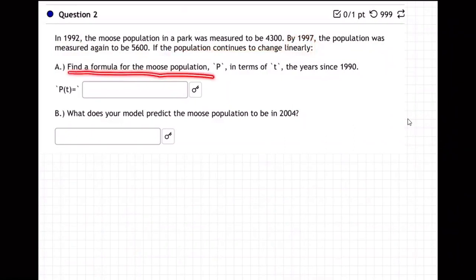Find a formula for the moose population, P, in terms of T, years since 1990. So they're doing this thing again. Notice they're giving us the standard of communication. T has got to be years after 1990. And then part B, use that model to predict something. Okay, so let's come down here and do part A.